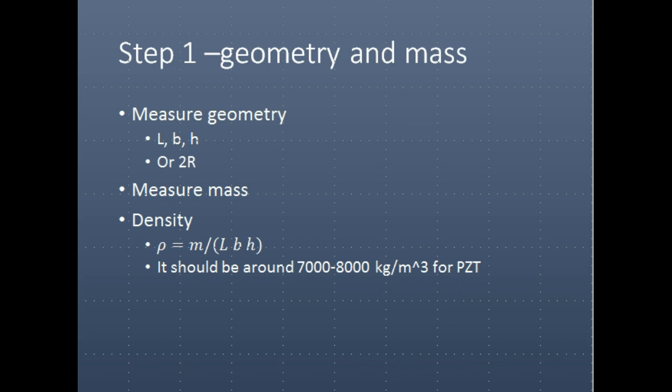The first step is to measure the geometry. Measure the length, the base, the height using a micrometer or caliper, measure the radius, then you measure the mass, and therefore you can find the density. You can also use another method called the Archimedes method, where you measure the mass of the sample in air and in water, and using some equations you may be able to find online, you can also determine the density that way, which would be a more accurate way. But nonetheless, you need to measure the major dimension of vibration.